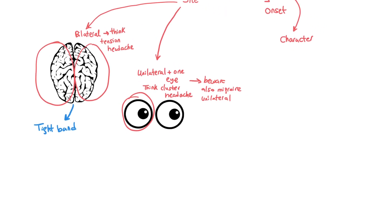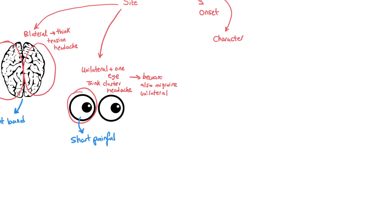Now going to cluster headache — we said it's unilateral, affecting one eye. The main thing to understand is that patients always describe it as a short, painful headache affecting one eye. For migraine, it's slightly different — it's described most of the time as a unilateral pulsating headache.